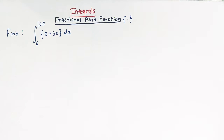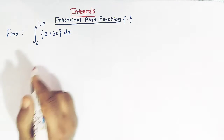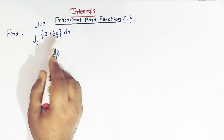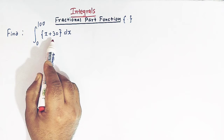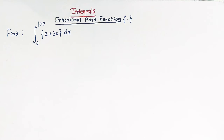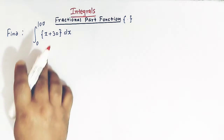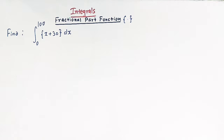Hello viewers. In today's class we are going to discuss yet another important and very conceptual problem from definite integrals involving fractional part function. So here we'll solve this important integral where we have to find the definite integral from 0 to 100, where the integrand is the fractional part of x plus 30. We'll use some properties of fractional part function and greatest integer function to simplify this integral and reduce it to a simple form. So let us start.